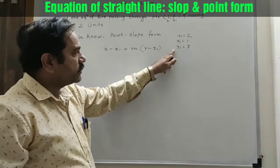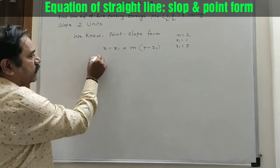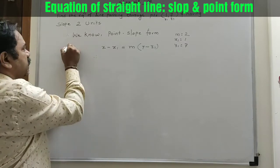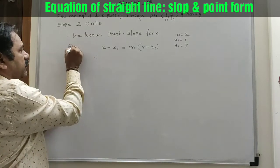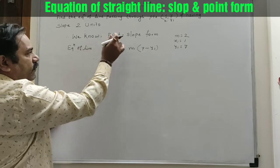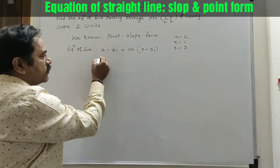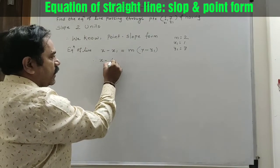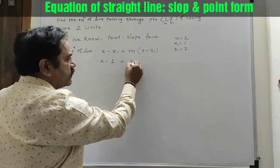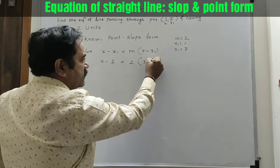So we have to put these three values in the equation of line. This is the equation of line in the form of slope and point. So x minus x1 equals m into y minus y1, which gives x minus 1 equals 2 into y minus 7.